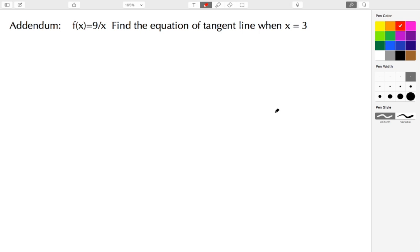Welcome back to ajspeller.com. In today's video, we're going to find the equation of the tangent line at the point x equals 3 for the function f of x is equal to 9 divided by x.